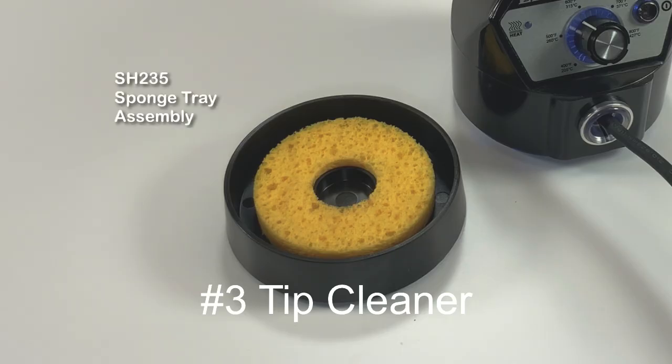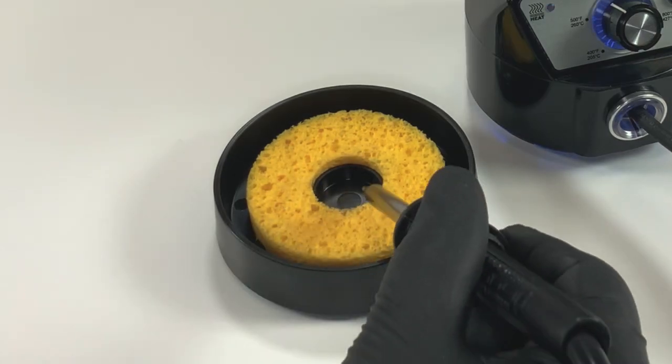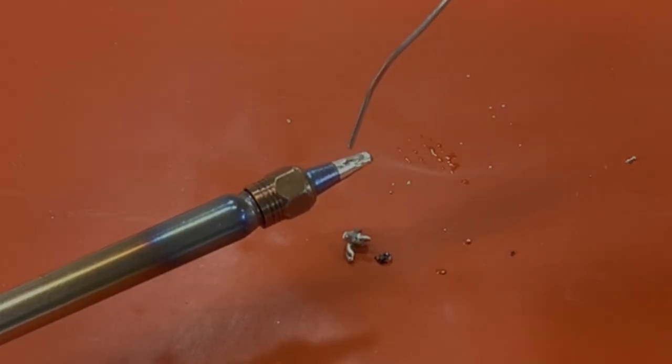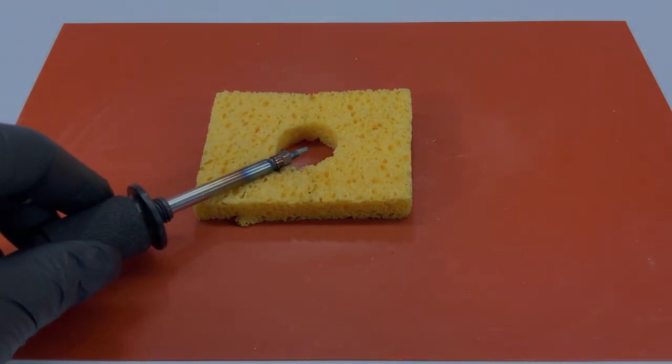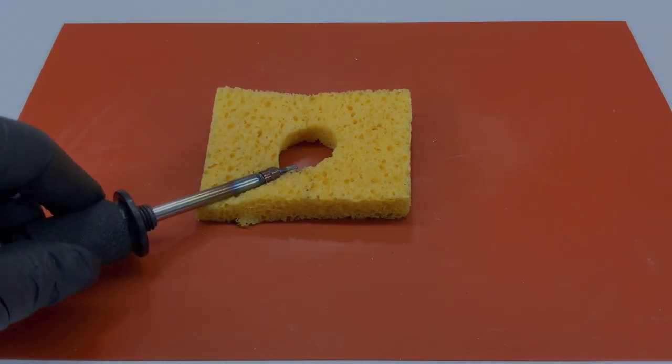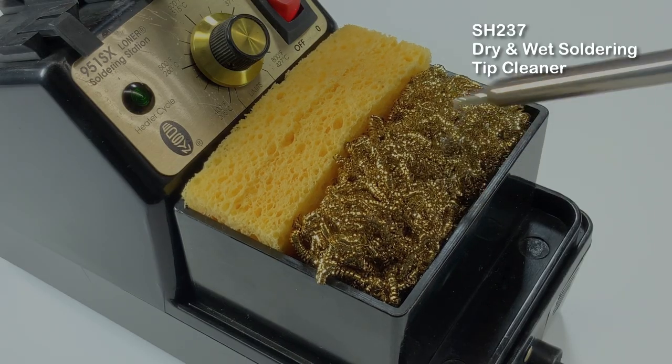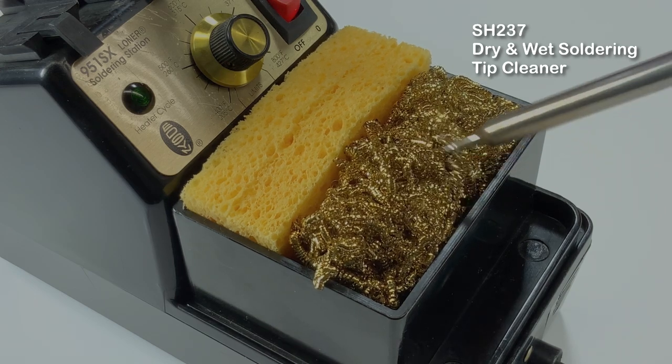Number three, tip cleaner. Having a damp sponge will provide a cleaning area for the hot soldering tip that has burnt flux and oxidized solder so you can reapply fresh solder to the tip for a clean process. If it's moist and large enough, you can lower the soldering tip temperature of a fixed wattage tool. A dry tip cleaner will remove oxidized solder and burnt flux off the tip with minimal temperature drop.